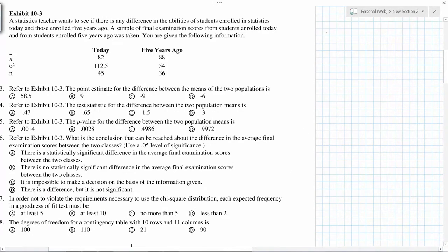Step one: means are equal or mu1 is not equal to mu2. At later stage it says five percent, so alpha is 0.05. Third one, because sigmas are known, we use Z distribution.